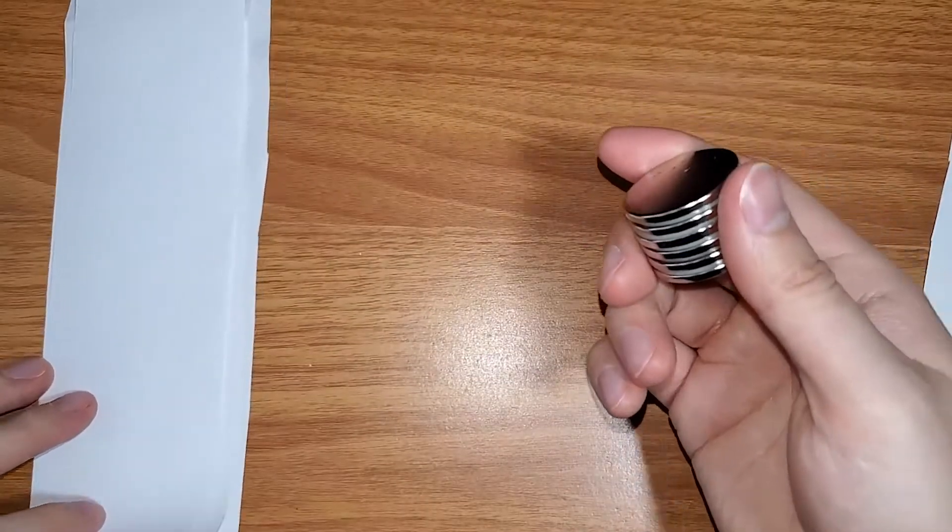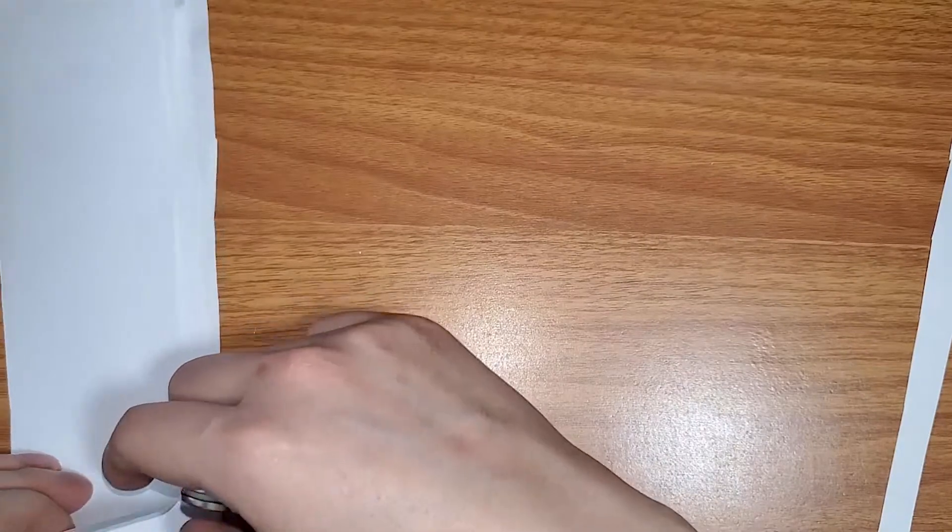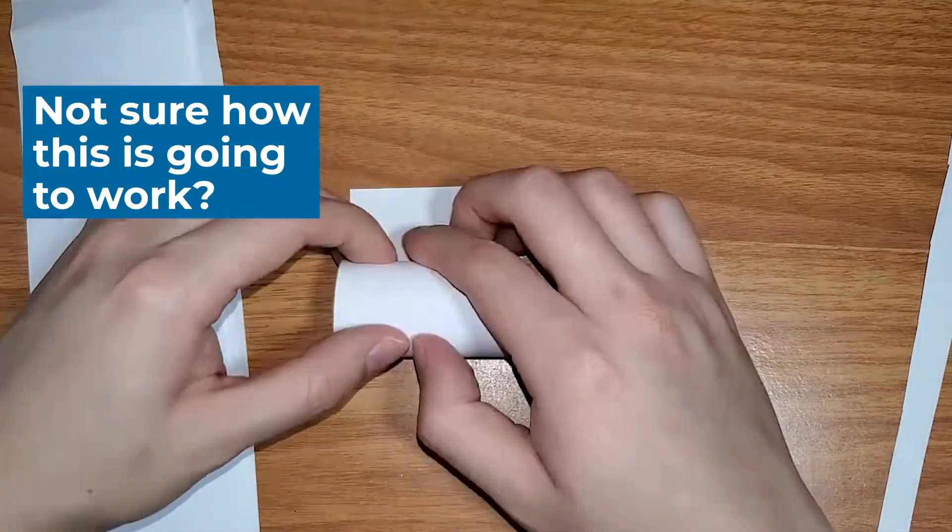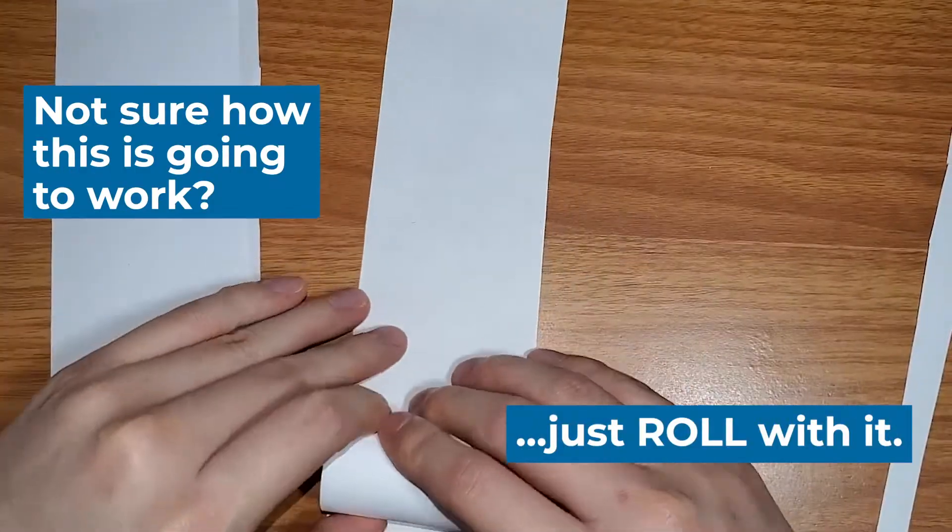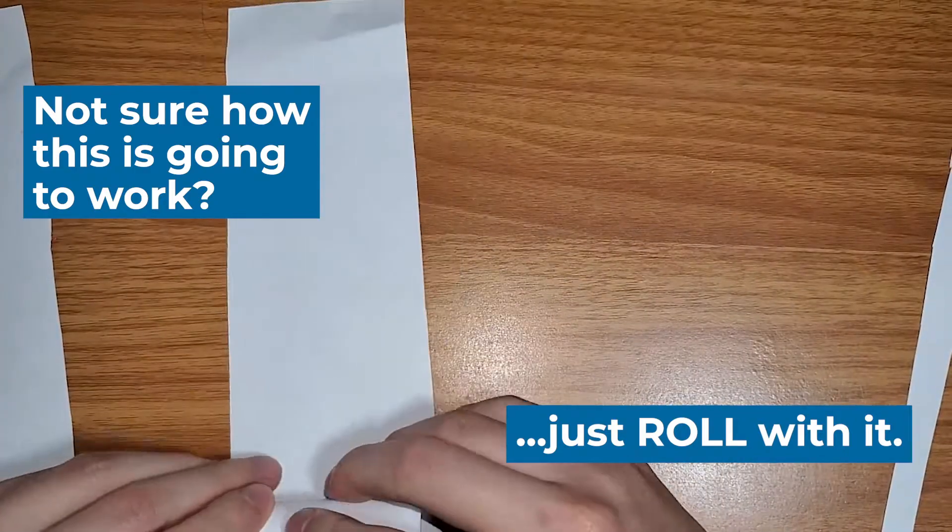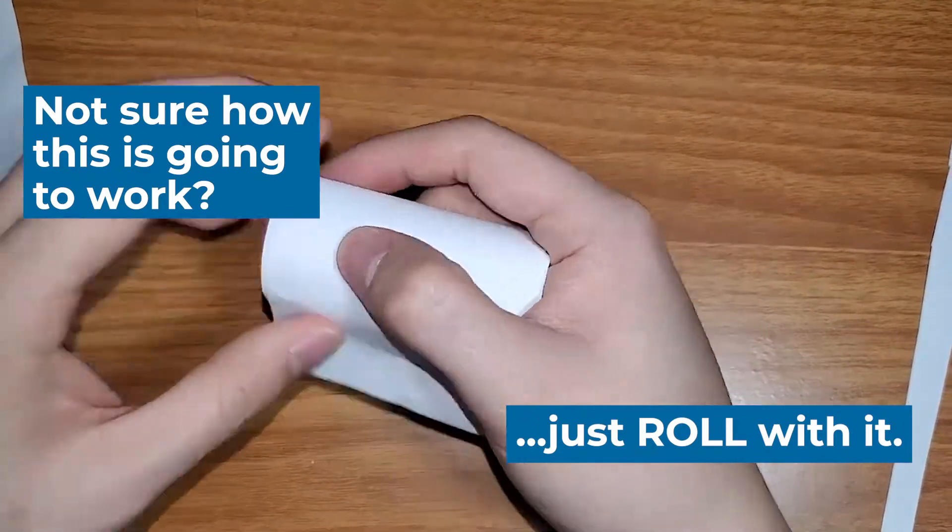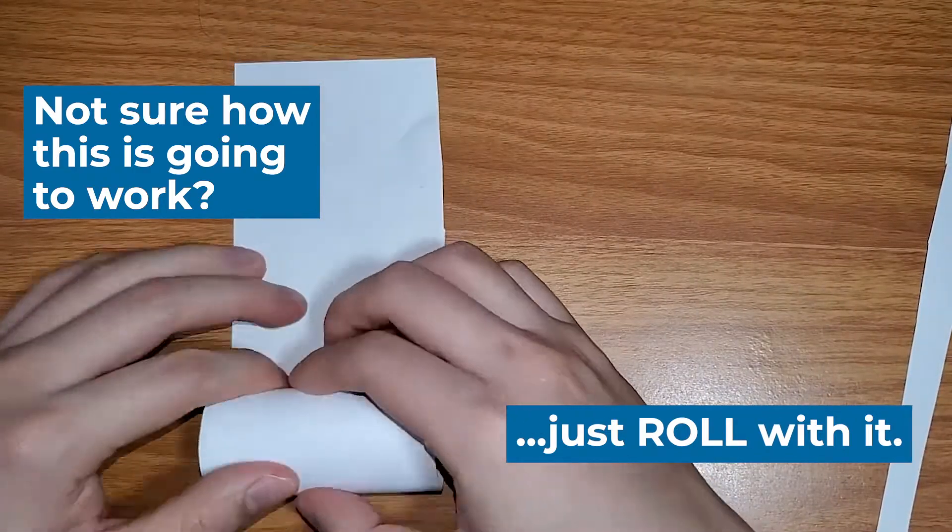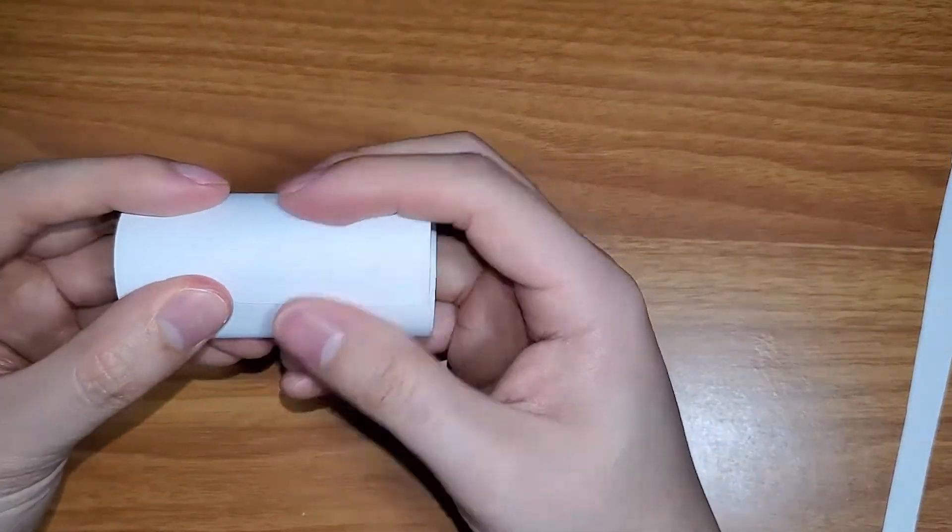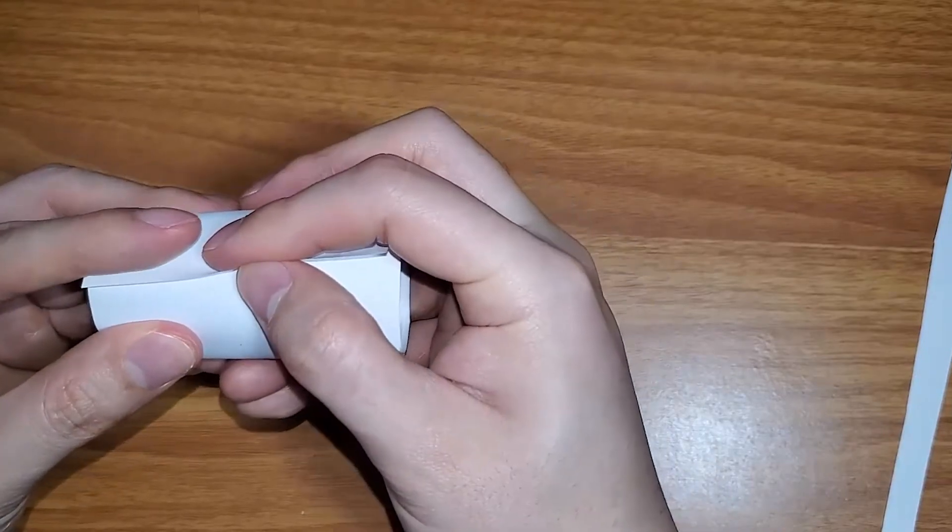Now that we have the strips of paper cut out, we're going to take a head of magnets, our stack, and we want to start rolling them up. Now that we have this all rolled up, we're going to go ahead and tape it together.